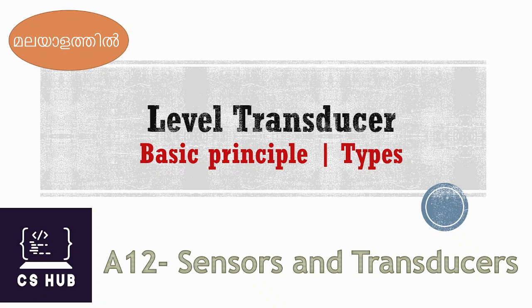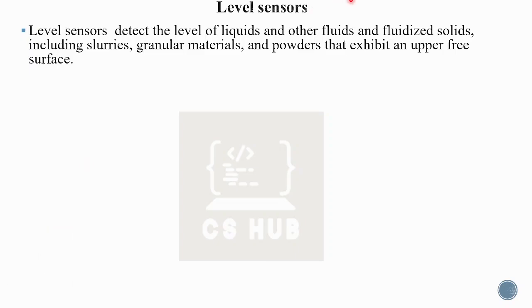Welcome to today's lesson on level transducers: basic principles and types. The subject is Sensors and Transducers, Module 3, which covers pressure transducers and level transducers. A level transducer detects the level of liquids and fluidized solids, including slurry, granular material, and powders that exhibit an upper free surface — that is, liquid or semi-fluid substances.